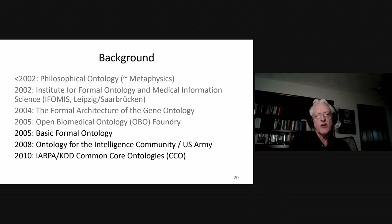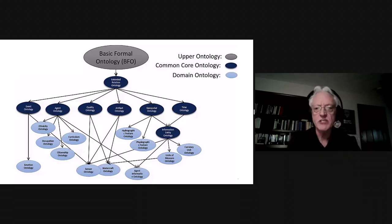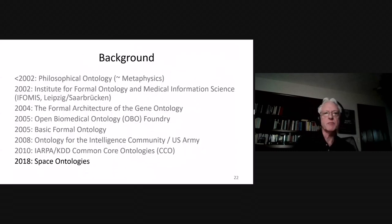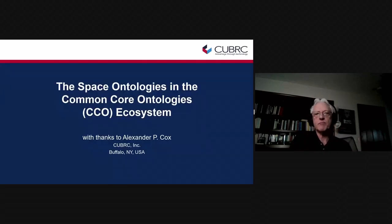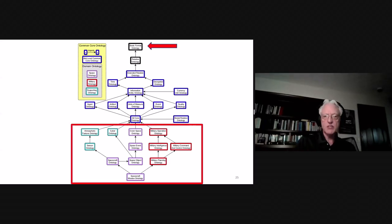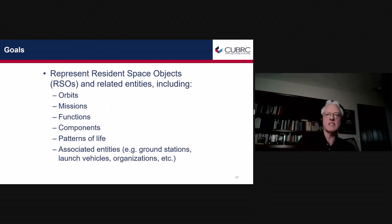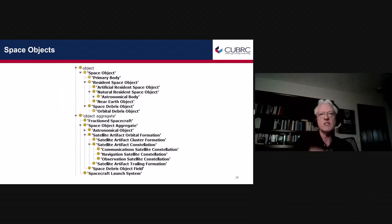In 2010, my colleagues in Buffalo received a very large IARPA grant to create a set of ontologies to deal with everything in the universe. These are called the common core ontologies. What is important is that some of the ontologies within that ecosystem were created for space. This is the common core ontologies ecosystem. The space ontologies are down here. We have space event ontology, space object ontology, space mission ontology, and so forth. We deal with things like resident space objects such as satellites, missions, functions, components.